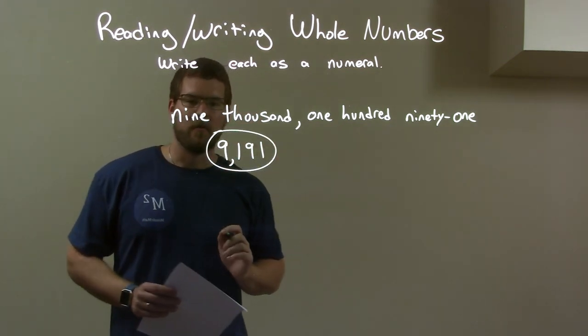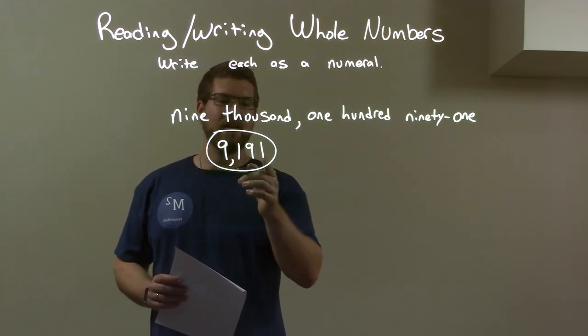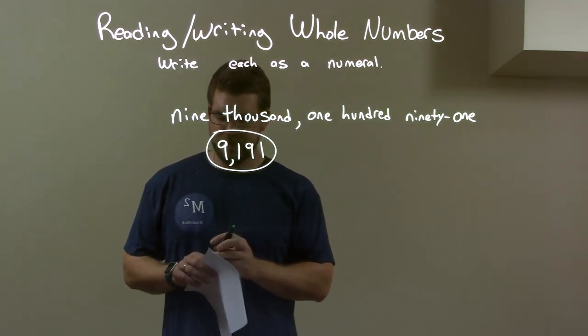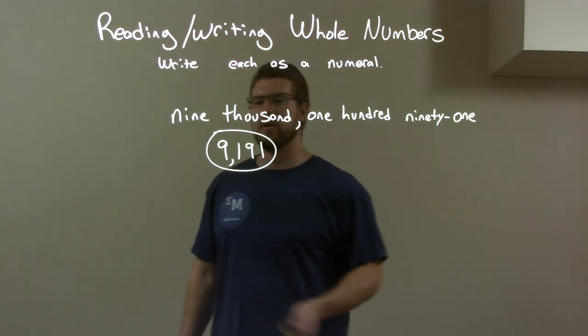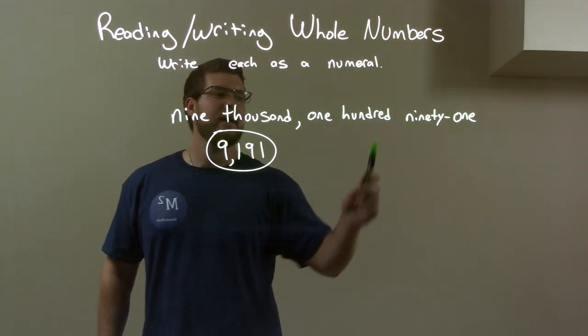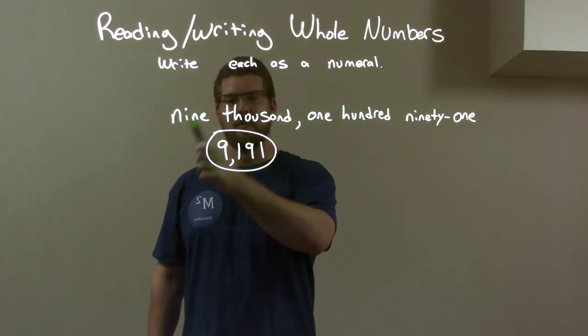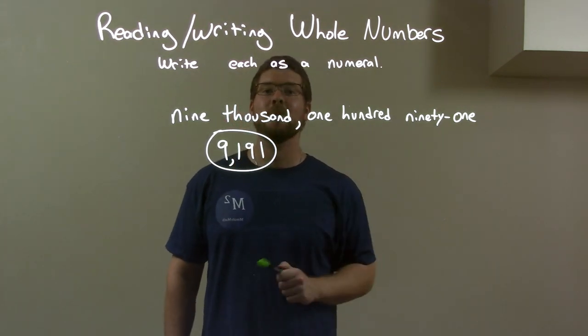So, our final answer, we can see here, we have the 9,191. Quick recap, we have 9,191. We first start with that 9 in the thousandths place. Then the 100 came in next, so there's no space there. Then the 91. So, together we have our final answer, 9,191.